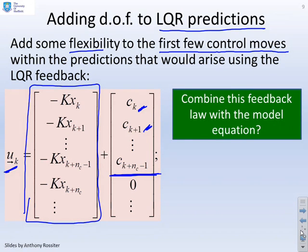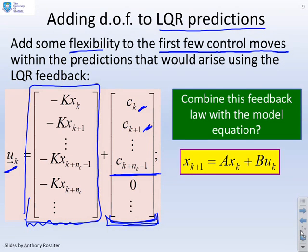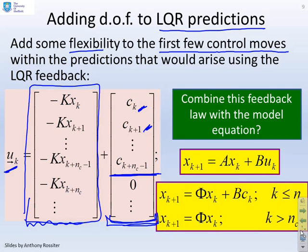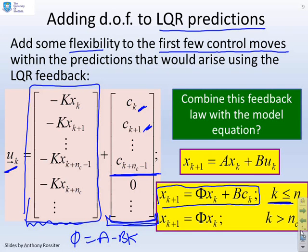We combine this feedback law now with our model equation. We already had our default feedback and we've now added some perturbations. What's this going to do to the state predictions and the input predictions? There's our underlying model, x_{k+1} equals Ax_k plus Bu_k. I've added this control law. What you actually end up with is for the first n_c steps, your prediction model is x_{k+1} equals phi x_k plus Bc_k. Phi was defined as A minus BK. Then once you go beyond the first n_c steps and you're no longer adding these perturbation terms, you just get x_{k+1} equals phi x_k. Now we have our prediction model, which depends on our initial state x_k and our perturbation terms c_k.